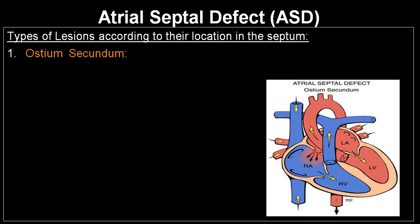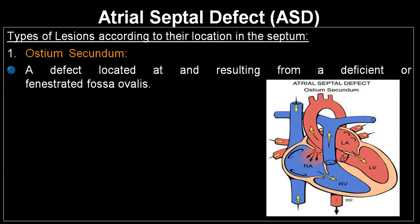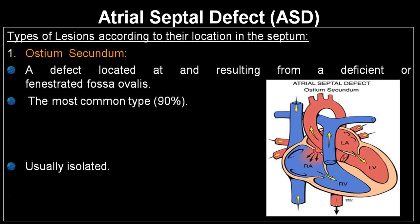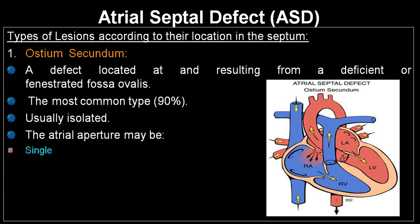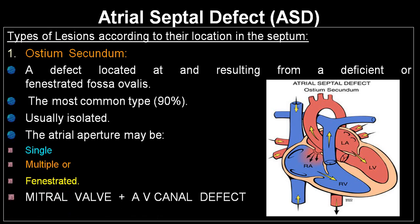Ostium secundum defect results from a deficient or fenestrated fossa ovalis and is located in the center of the interatrial septum. It is the most common variety, accounting for 90% of ASD cases. It is usually a single, isolated defect and may rarely be multiple or fenestrated. It may occasionally be associated with mitral valve defects or AV canal defects.